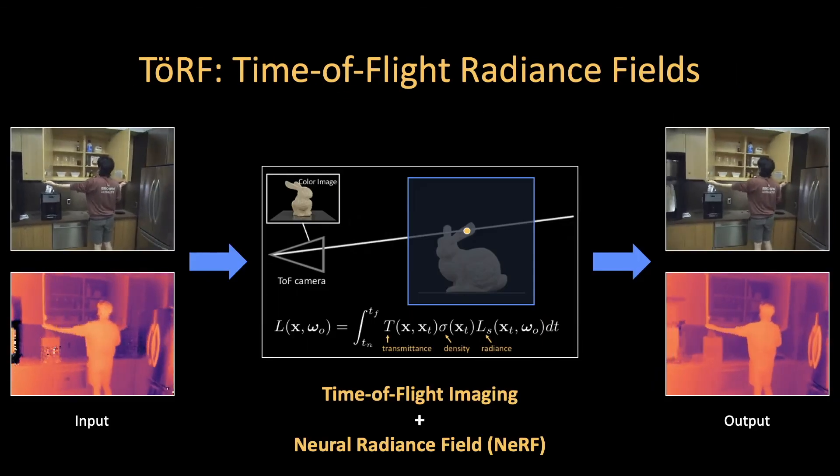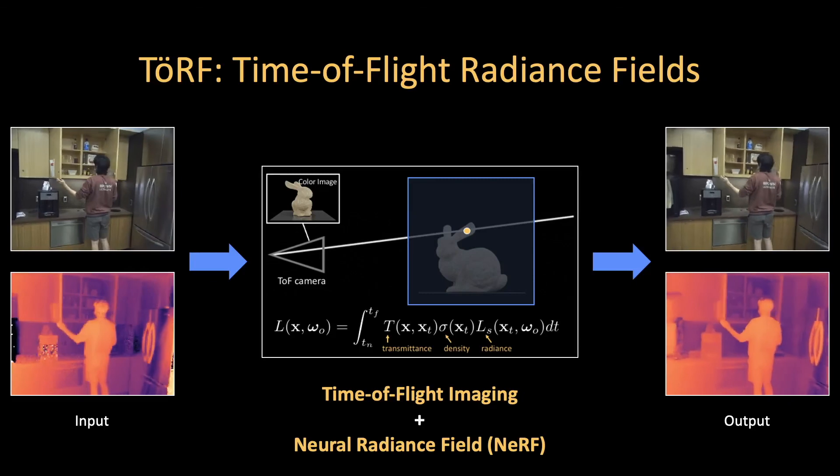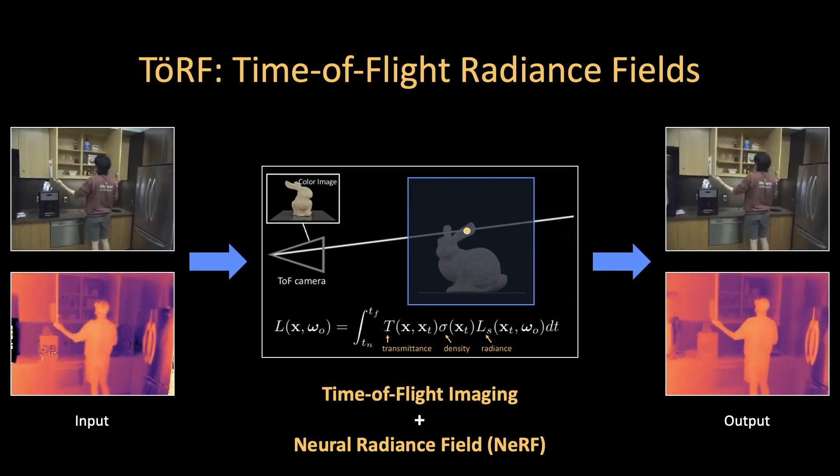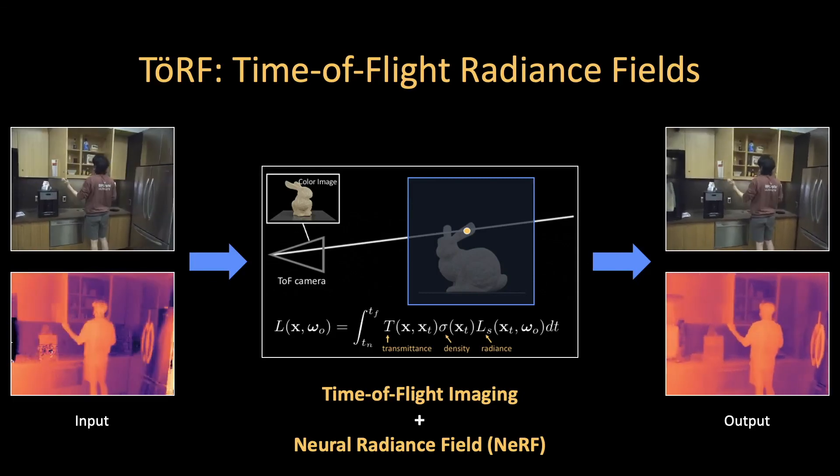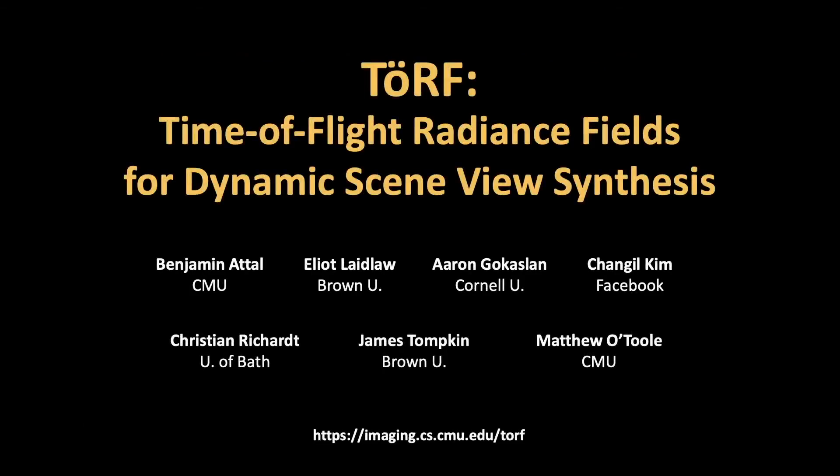In summary, Turf improves dynamic scene view synthesis by leveraging time-of-flight data in a physically-based image formation model. It helps resolve common error modes in time-of-flight depth, and so outperforms baselines that use deep priors for geometry and motion. Please visit our webpage to find the source code and data. Bye-bye.